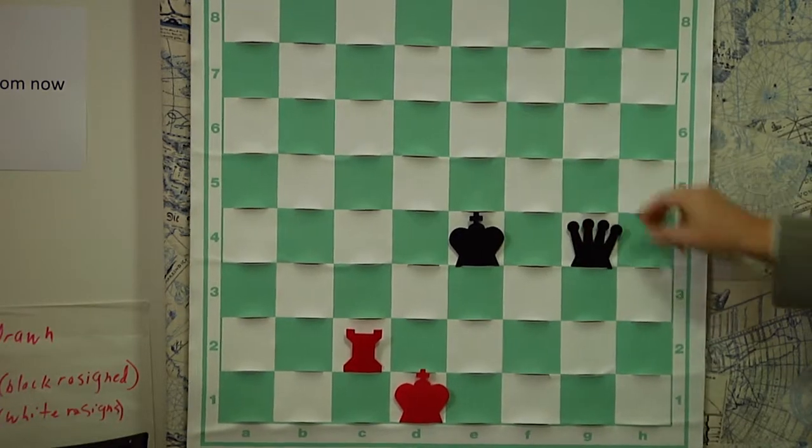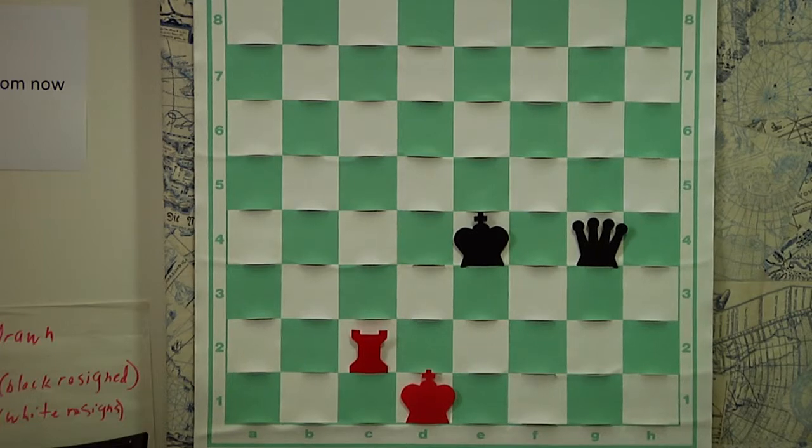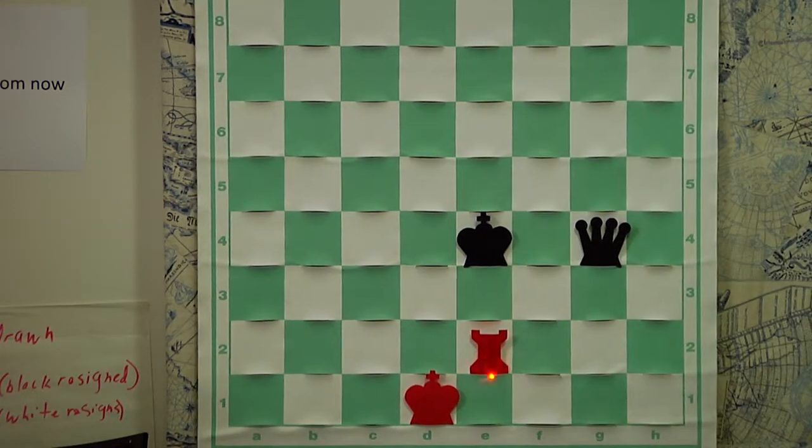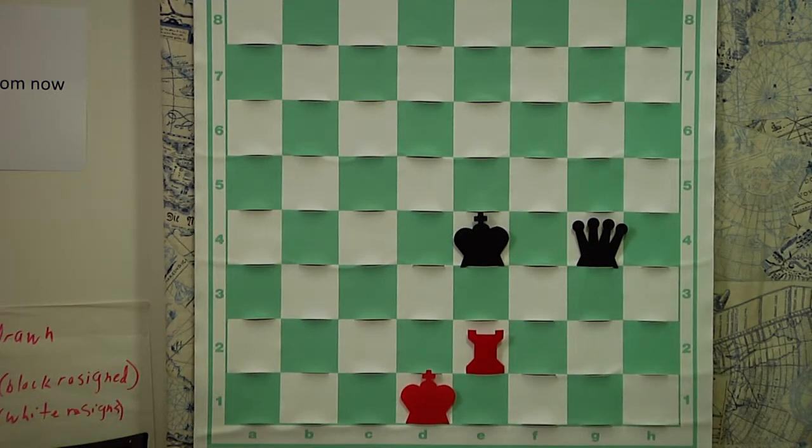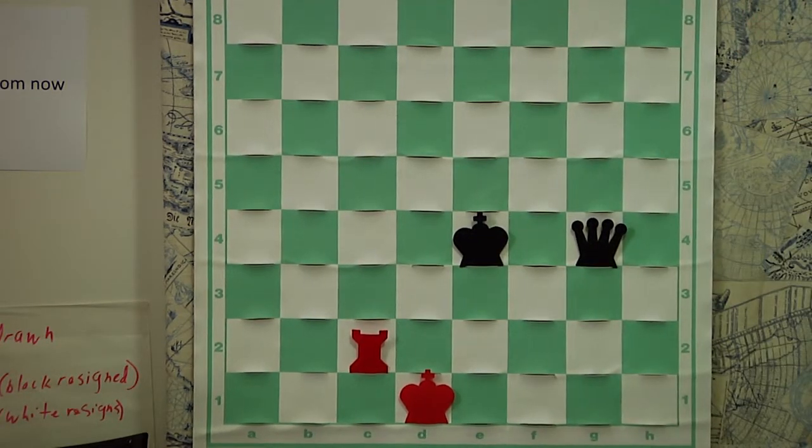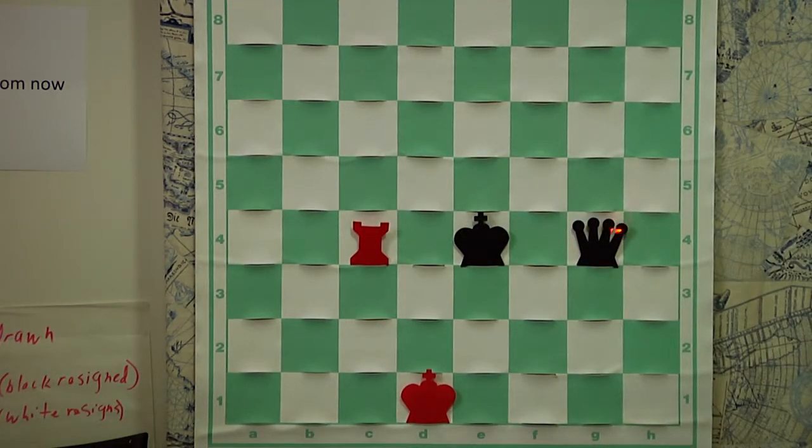Here, the queen places the red king here into check. White will block the check getting out of check and happen to put the black king into check. So, under these circumstances, you can see, yes, you can get your king out of check by putting your opponent's king in check, but only because you got your own king out of check. It would not be legal, for example, in this position, the same position, to bring the rook up and put the king in check. No, because the red king remains in check.